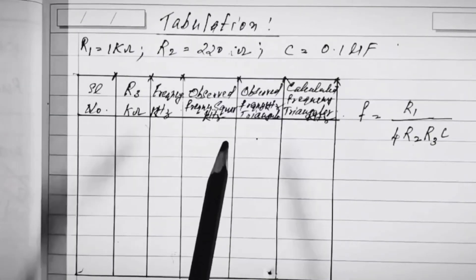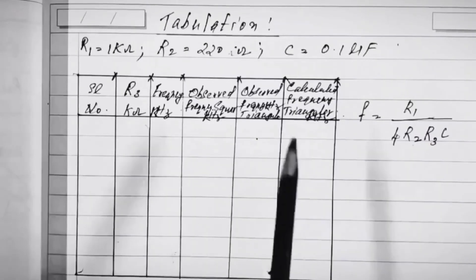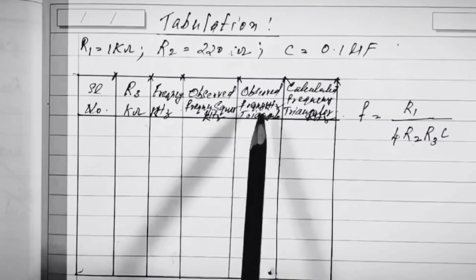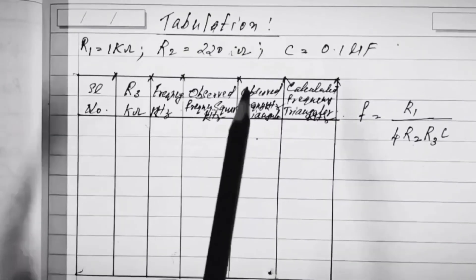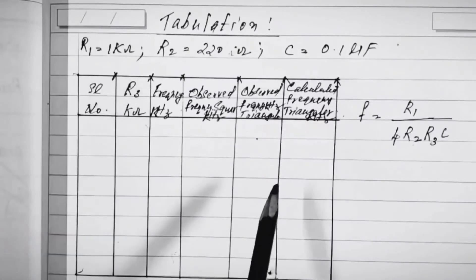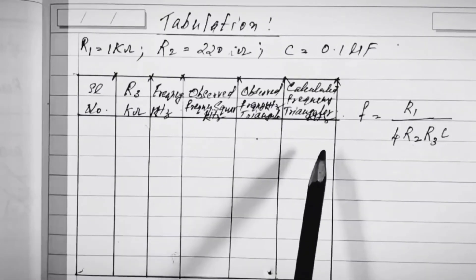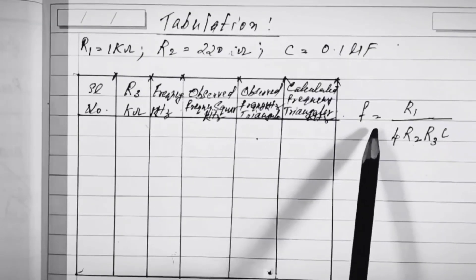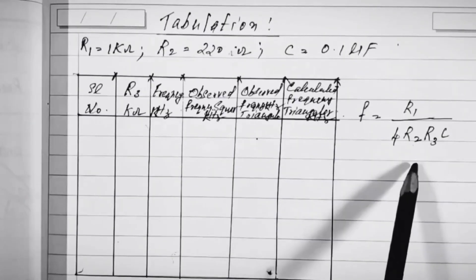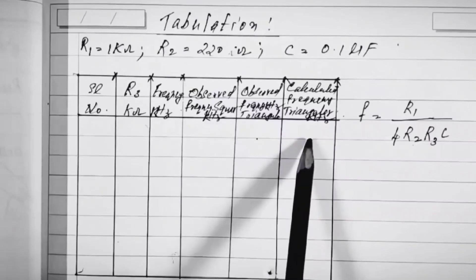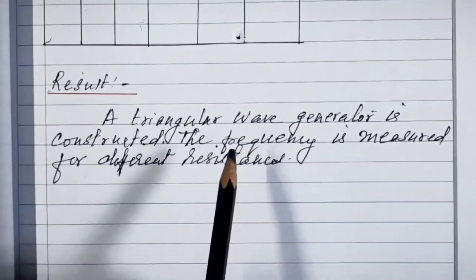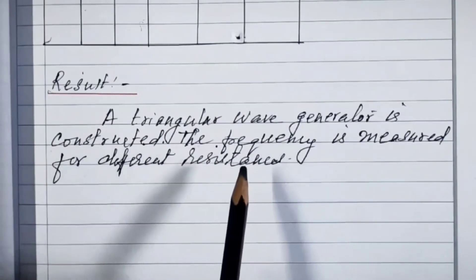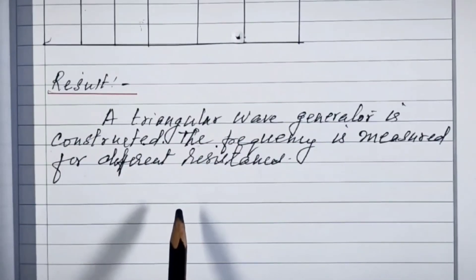If using a CRO, you need to calculate the frequency from the time period. The next column records the observed frequency of the triangular wave, read directly from the DSO or calculated from the CRO. The last column is the calculated frequency of the triangular wave in kHz, using the formula F = R1 / (4 × R2 × R3 × C). Thus, the result is that the triangular wave generator is constructed and the frequency is measured for different resistance values. Thanks.